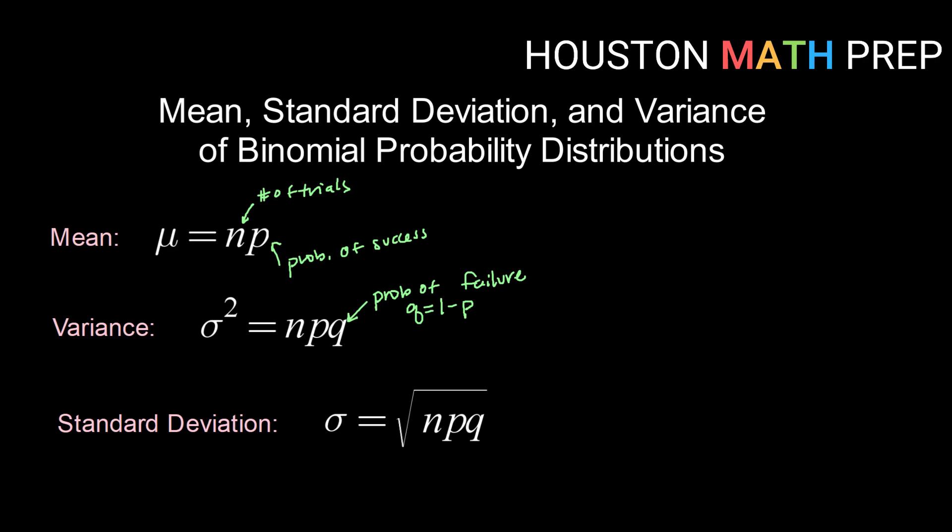And, as always, standard deviation, or sigma, is simply the square root of our variance. So in this case, sigma is the square root of n times p times q. Alright, let's see those in action.